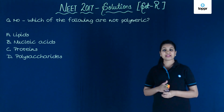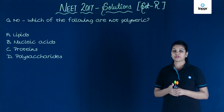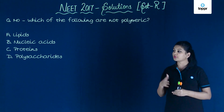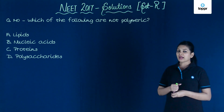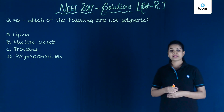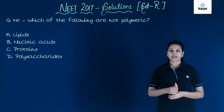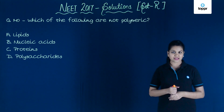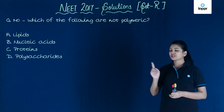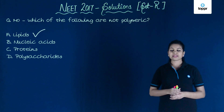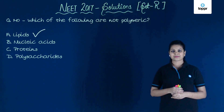The nucleic acids are made up of nucleotides, the proteins are made up of amino acids, and the polysaccharides are made up of monosaccharides. So the correct option is option number one, which is lipids.